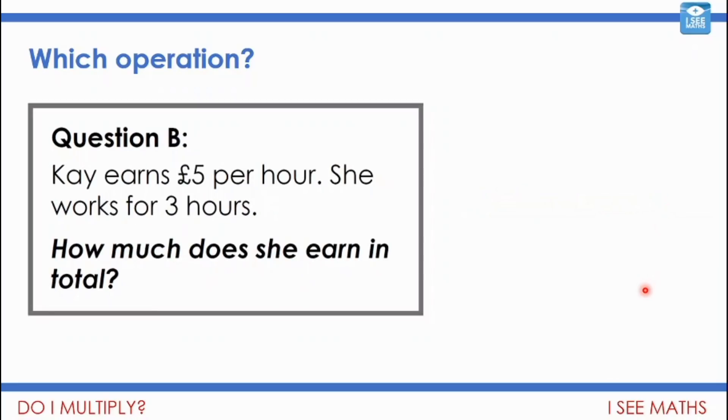Well, what about question B? Kay earns 5 pounds per hour. She works for 3 hours. How much does she earn in total? Pause the video.